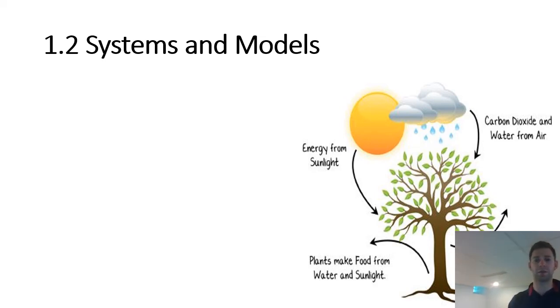All right, so our next sub-topic is 1.2, Systems and Models. This is less of an environmental topic, but it's really important in terms of understanding a lot of the terminologies and the way that we understand things within this course. Obviously, this is Environmental Systems in Societies, so this whole sub-topic goes over the concept of systems and what a system is, why we use systems.